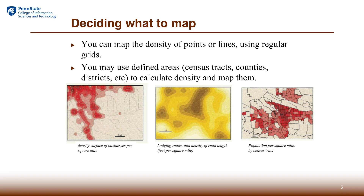The first example shows the density surface of businesses per square mile — this is more like mapping density on regular grids. If the grid is detailed enough, you can see something very close to a continuous surface. The second map shows the density of roads per square mile, mapped more like an isoline map, but you can achieve similar results if your grid is fine enough.